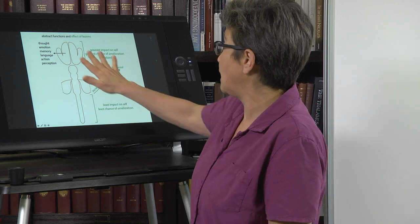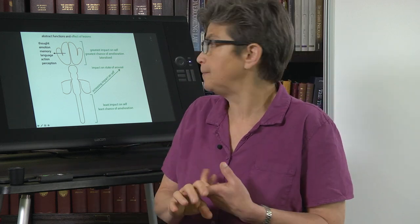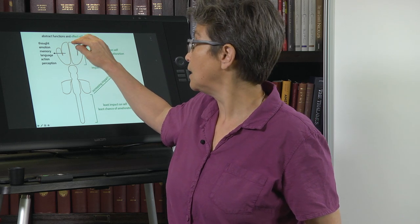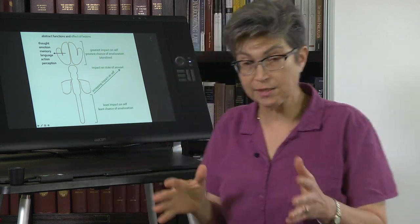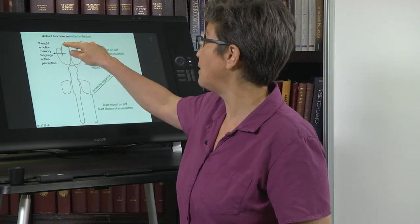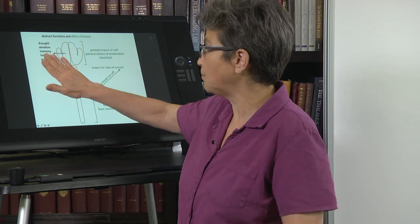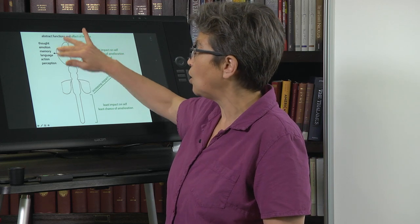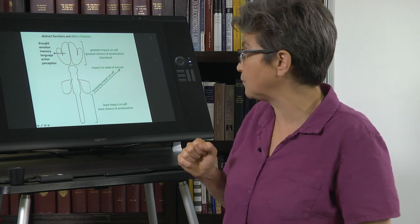The final of the four functions is abstract function. The brain is responsible for thought, emotion, motivation, action, and perception — all of that depends on the telencephalon. There is one important asymmetry: the left hemisphere is critical for speech production and for the understanding of complex speech. Some simple comprehension can occur on the right side, but complex speech comprehension and speech production are a product of the left hemisphere.